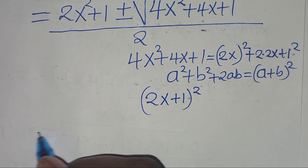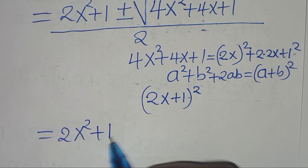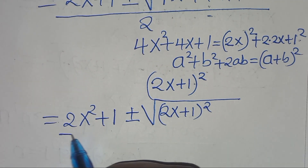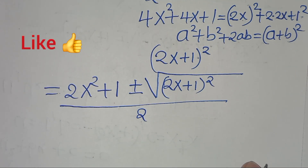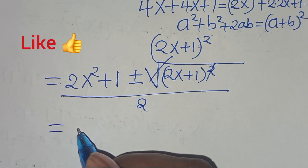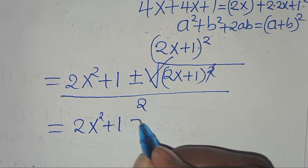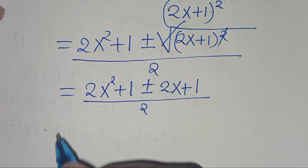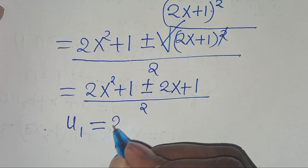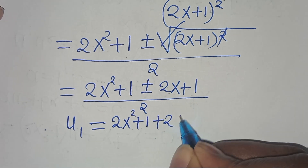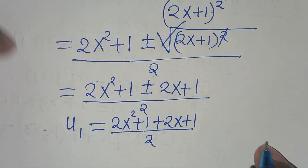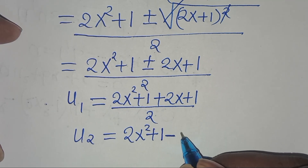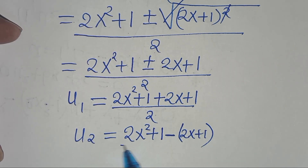Substituting back, we have 2x squared plus 1, plus or minus the square root of (2x plus 1) squared, divided by 2. Eliminating the square root gives 2x squared plus 1, plus or minus (2x plus 1), over 2. So u₁ equals (2x squared plus 1 plus 2x plus 1) divided by 2, and u₂ equals (2x squared plus 1 minus 2x minus 1) divided by 2.